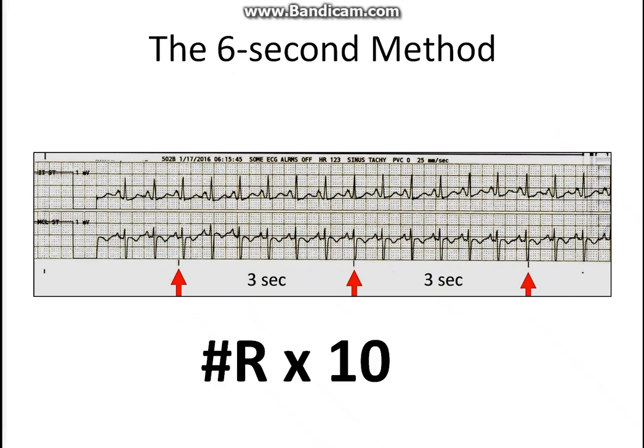The next is the six second method. In a two lead strip there are small lines at the bottom which I highlighted with red arrows. You can see these lines in your typical two lead strip printout. These lines represent three seconds interval. For the six second method you count the number of R waves if you are computing for the ventricular rate, or P waves if you are computing for the atrial rate, inside the six second strip. You then multiply the number of R or P waves by 10. Remember the multiplier is 10, then you get the rate.